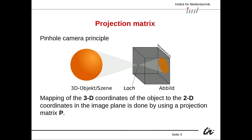Here you can see the principle. This box is basically a pinhole camera where you have a tiny hole, and then you have a 3D object like a ball. Light rays go through this little hole, and because light waves always travel in straight lines and must pass through this hole, they make a projection of the object onto a 2D surface — the screen. So in effect we have a mapping of 3D coordinates onto 2D coordinates of the image plane.